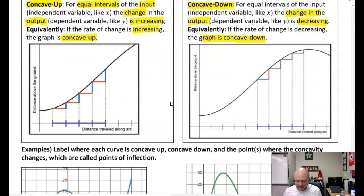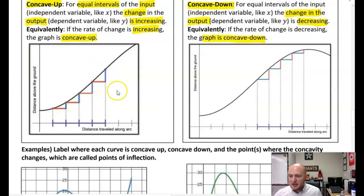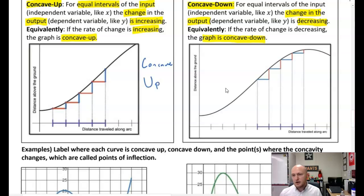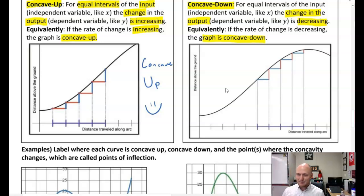We have a couple of examples here. This instance is concave up, and over here this instance is concave down. There are very simple and straightforward ways to identify concave up: the graph is opening upwards — think like a smiley face, concave up, everything is happy. Whereas concave down, the graph is opening downwards — this is a sad face.